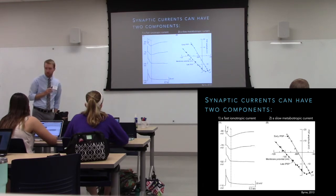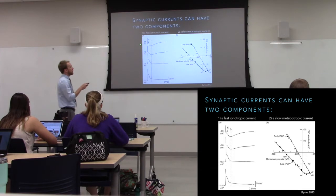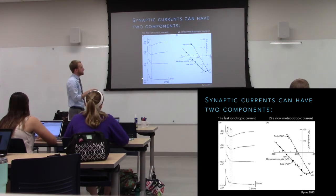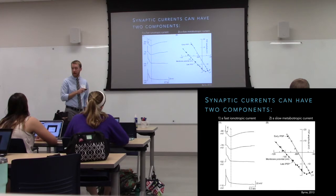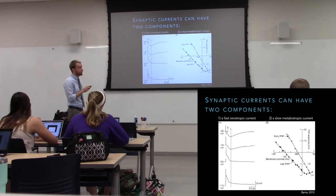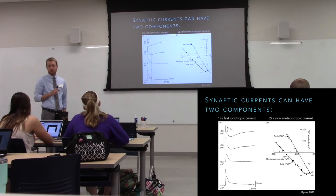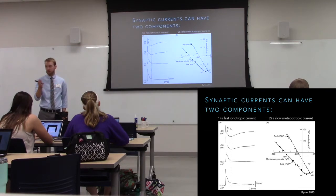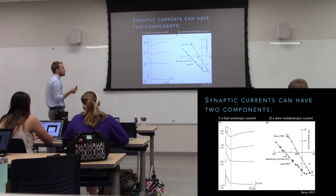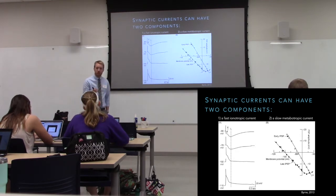We're looking at the postsynaptic potential driven by that current while holding the cell at different membrane potentials, so we can see where they reverse. The early component is inward at negative 66 millivolts, and when we hit negative 78, there's no real current. When we're more hyperpolarized than that, it's outward — that's where it reversed. At reversal potential, no net flux, no current, because there's no driving force. We can find the reversal potential experimentally and then say which ion is mediating that current.